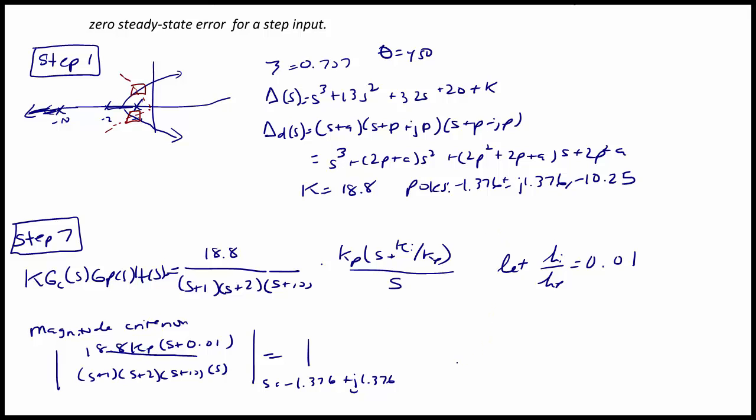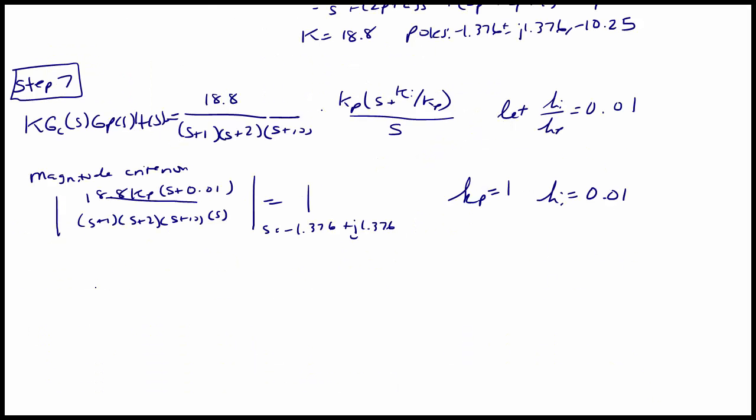When we solve this equation, we get that Kp = 1 and Ki = 0.01. So the controller Gc(s) = (s+0.01)/s.